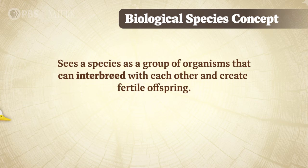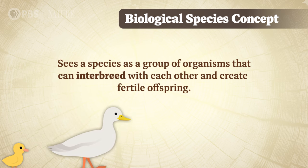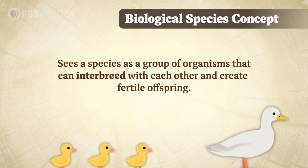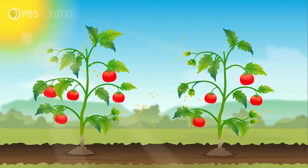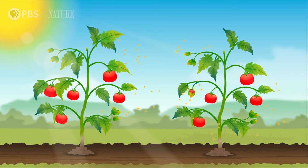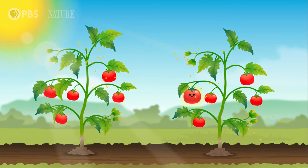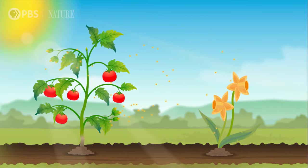So as scientists learn more about organisms, their classifications can change. And when that happens, we need to adapt our language so that we can communicate more accurately. But what even is a species anyway? Just like how European and Bornean botanists disagreed about those two fruit trees, not all scientists agree on one definition of a species. Most scientists favor the biological species concept, which sees a species as a group of organisms that can interbreed with each other and create fertile offspring. A tomato plant can make more tomato plants by swapping pollen with another tomato plant, but nothing happens if it swaps pollen with a daffodil — they're two different species.